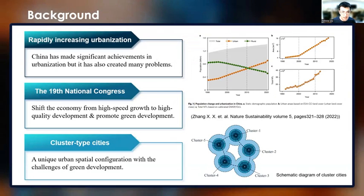Over the past 30 years, China has made significant achievements in urbanization. Like the diagram shows, the urbanization rate of China has seen a substantial increase. However, the extensive mode of development has led to an amount of environmental issues. So, at the 19th National Congress, the country proposed the idea of shifting the economy from high-speed growth to high-quality development.